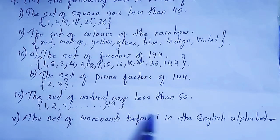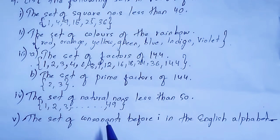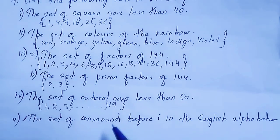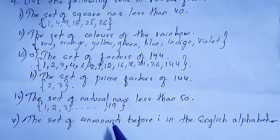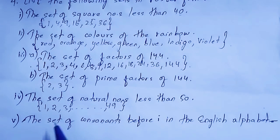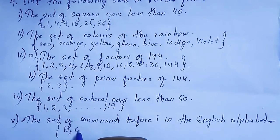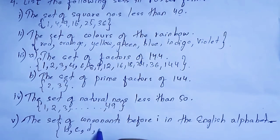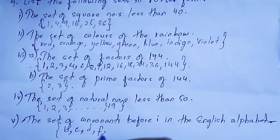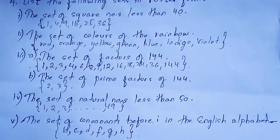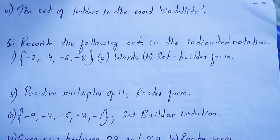Question 5: the set of consonants before I in the English alphabet. Consonants are all alphabets other than the vowels A, E, I, O, U. Before I: A is a vowel, skip; B is a consonant — include it; C is a consonant; D is a consonant; E is a vowel — skip; F, G, H are all consonants. So the set is {B, C, D, F, G, H}.